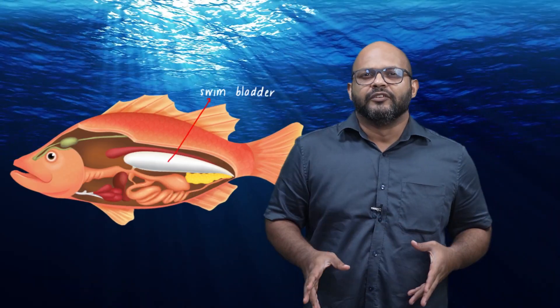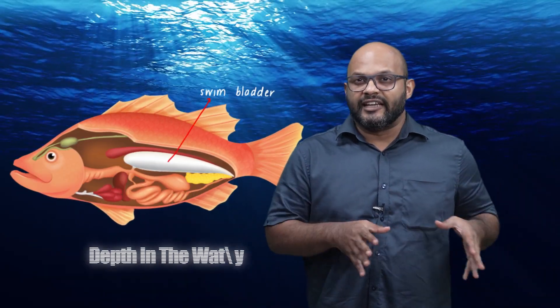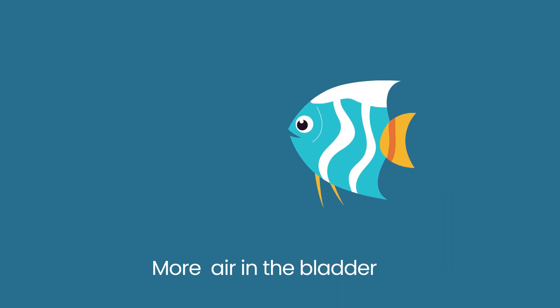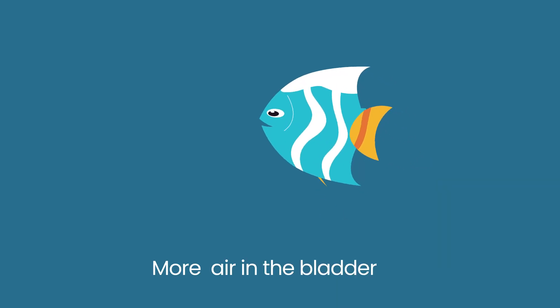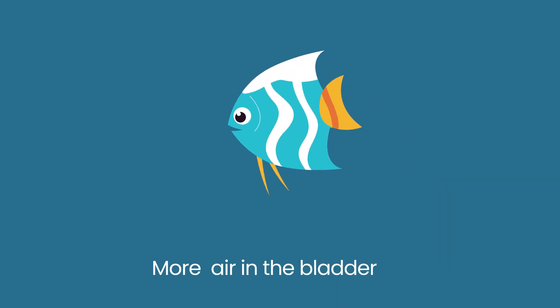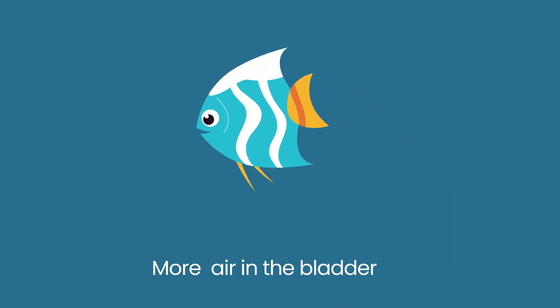Why do we have lungs, and where did they come from evolutionarily? Lungs evolved from the swim bladders of fish. Fish use swim bladders to regulate their depth in the water — more air in the bladder means less density, which means more buoyancy.